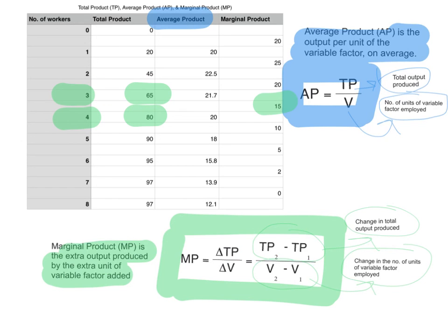Another example: when moving from 6 to 7 workers, total product goes from 95 to 97, so marginal product = (97 − 95) ÷ (7 − 6) = 2 ÷ 1 = 2. It is very important to be able to calculate marginal product and average product from a set of data.